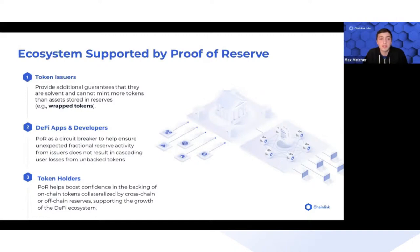But we see these same institutions deploying liquid tokens, wrap tokens, and off-chain collateralized tokens into DeFi, and it's important that DeFi is able to protect itself. They can use proof of reserve as a circuit breaker.